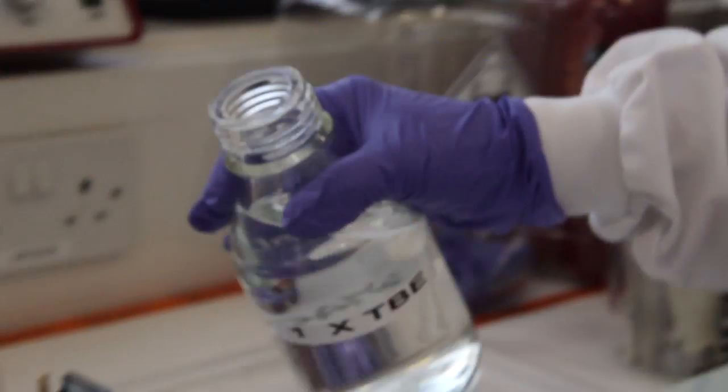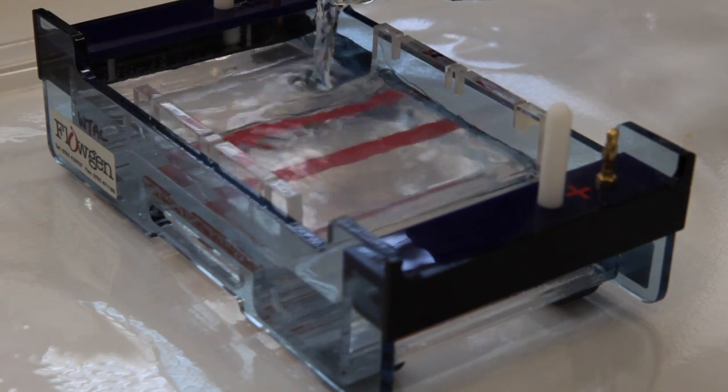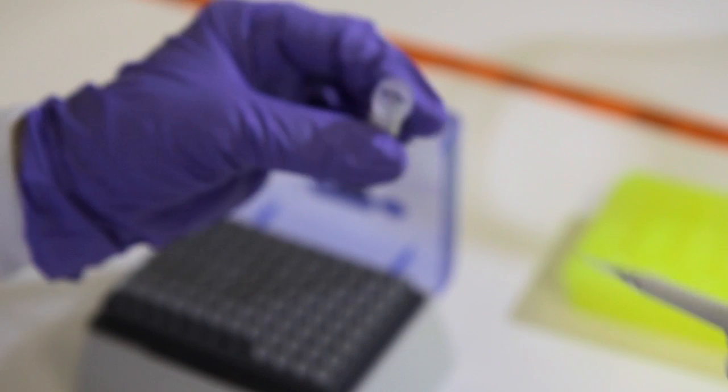Pour the 1x buffer into the gel tank to cover the gel by a few millimeters. You can load your gel from tubes or from parafilm depending on the dye you use.